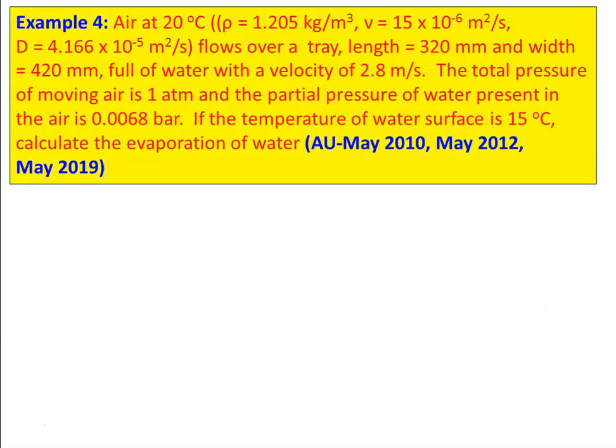We take example number four. Air at 20°C with ρ = 1.205 kg/m³, ν = 15 × 10⁻⁶ m²/s, D = 4.166 × 10⁻⁵ m²/s flows over a tray of length 320 mm and width 420 mm full of water at 2.8 m/s. Total pressure is 1 atmosphere; partial pressure of water vapor in air is 0.0068 bar; water surface temperature is 50°C. Calculate the evaporation rate of water. This is from May 2010, May 2012, and May 2019 question papers.